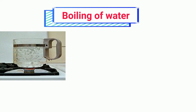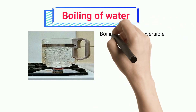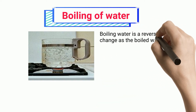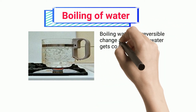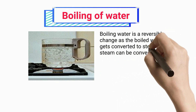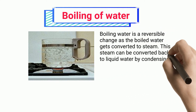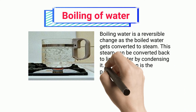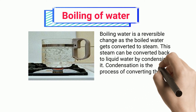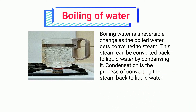Boiling of Water: boiling water is a reversible change as the boiled water gets converted to steam. This steam can be converted back to liquid water by condensing it. Condensation is the process of converting the steam back to liquid water.